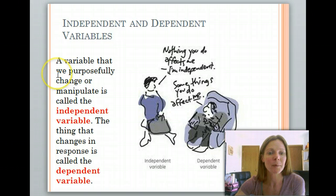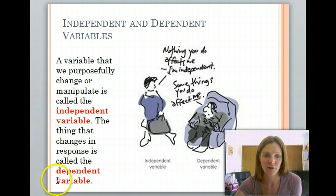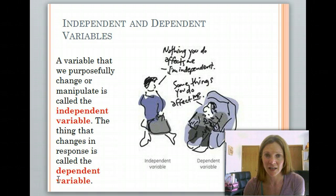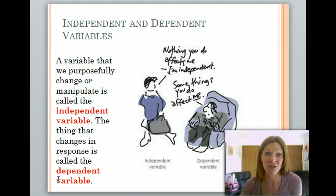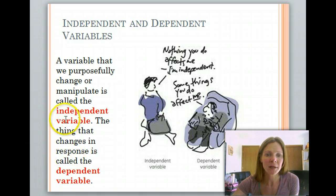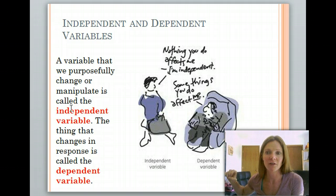A variable that we purposefully change or manipulate is called the independent variable — we're kind of manipulating that variable, therefore it is independent. The thing that changes in response is called the dependent variable. When you're dependent upon something, you're going to change in response to that. It's not necessarily changing because of anything other than us — we are actually changing that.